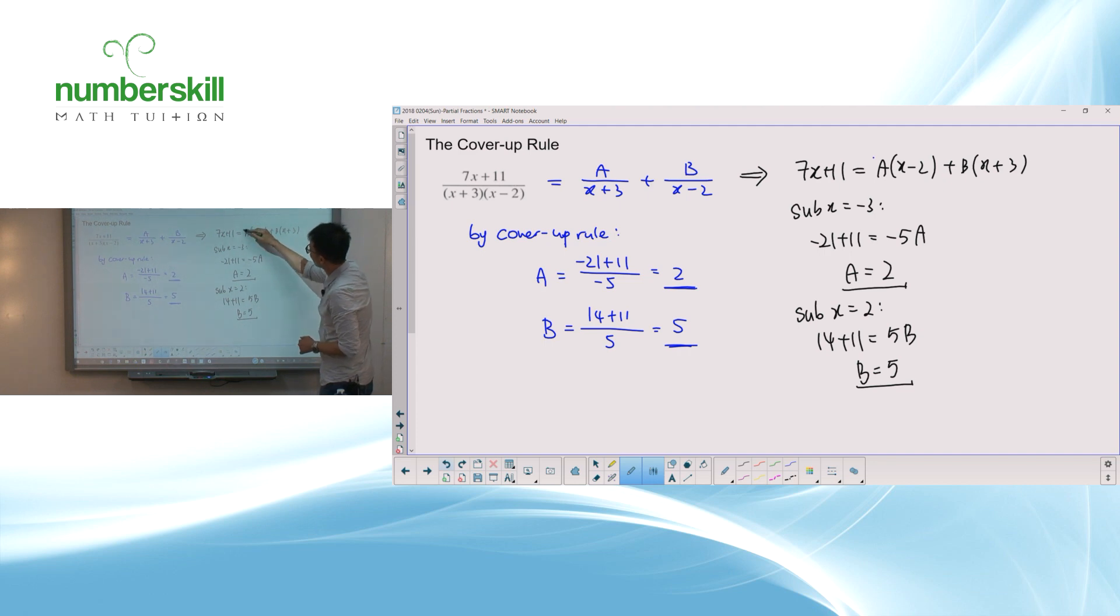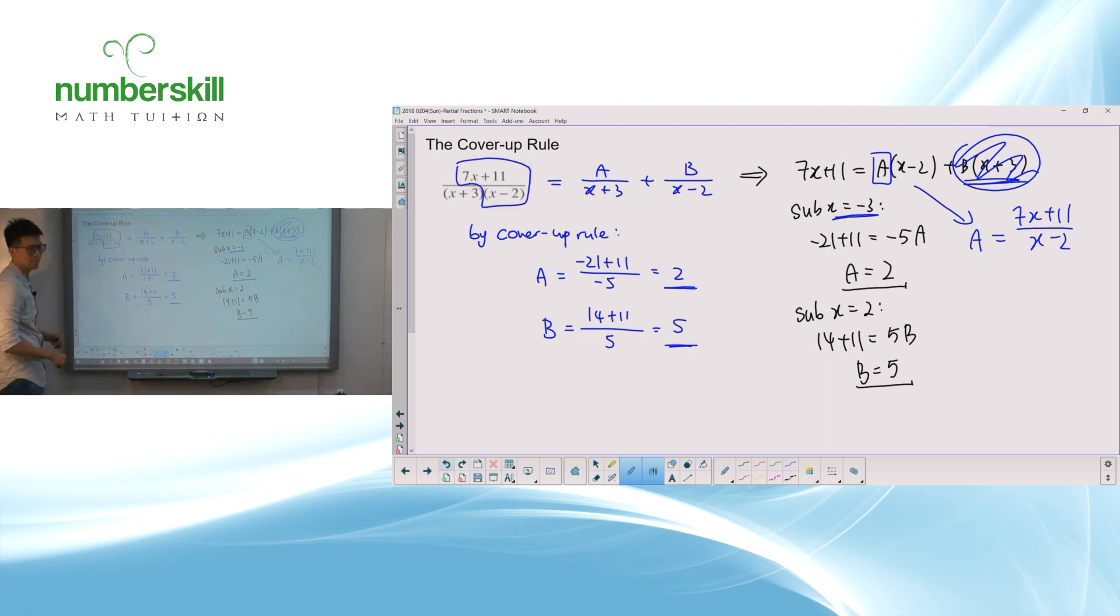It's like, wow, how do you do that? Well, actually, the secret is all here. It's not secret at all. Basically, you think about it. If I want to find A, I want to get rid of B. And how to get rid of B? Let x equal to minus 3. And when I do that, this will be gone. And your A, if you think about it, I make A the subject. A is actually 7x plus 11 over x minus 2. Agree? So, you just put the minus 3 inside here, which is here. And then you get A. That is the secret. It's actually the same. Just that you never show much working. And that's the cover-up rule.